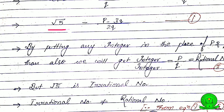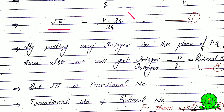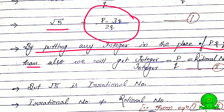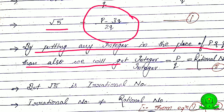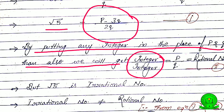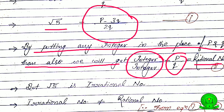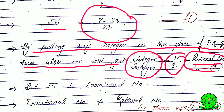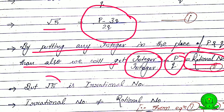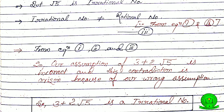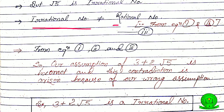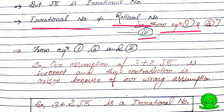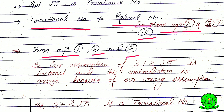Dividing both sides by 2, we get root 5 equals p minus 3q divided by 2q. By putting any integers in place of p and q, we get an integer divided by an integer, which is in the form p by q — a rational number. But we know root 5 is an irrational number, so a rational number cannot equal an irrational number. This is a contradiction.